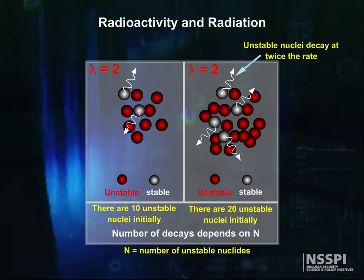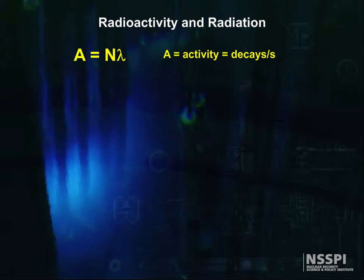Once we know the decay constant, the probability of a collection of atoms having a decay is just the number of atoms, n, times the decay constant, lambda. In math, this translates to activity A is equal to n lambda, where A is the activity in decays per second.